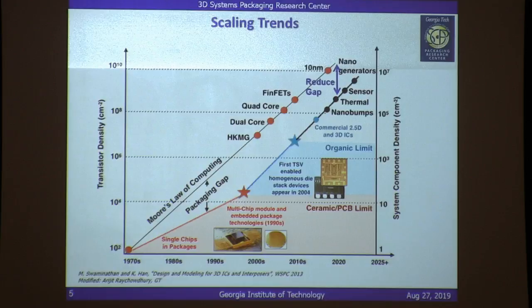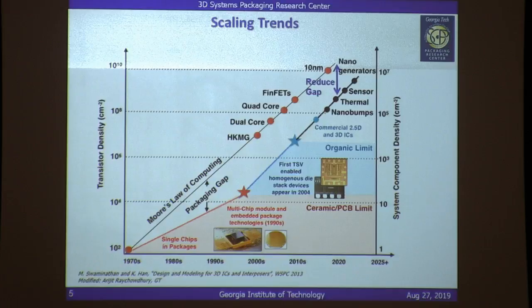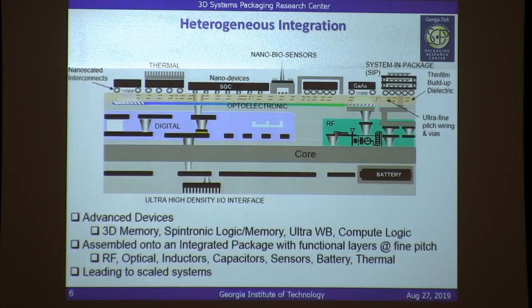What we would like to do is reduce the gap between what we've been able to do on the IC side — driven by Moore's Law — and miniaturizing components outside the IC, which is driven by what we call 'More than Moore's Law.' The end goal is to reduce this gap as much as possible, so that tiny transistors are assembled onto tiny packages.